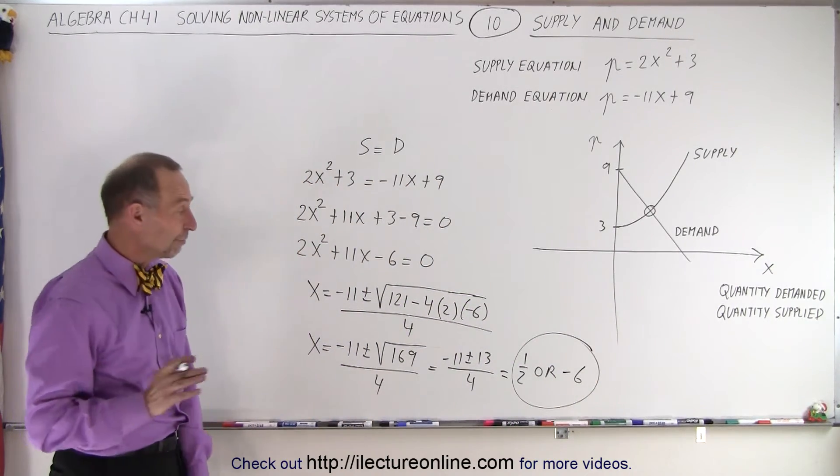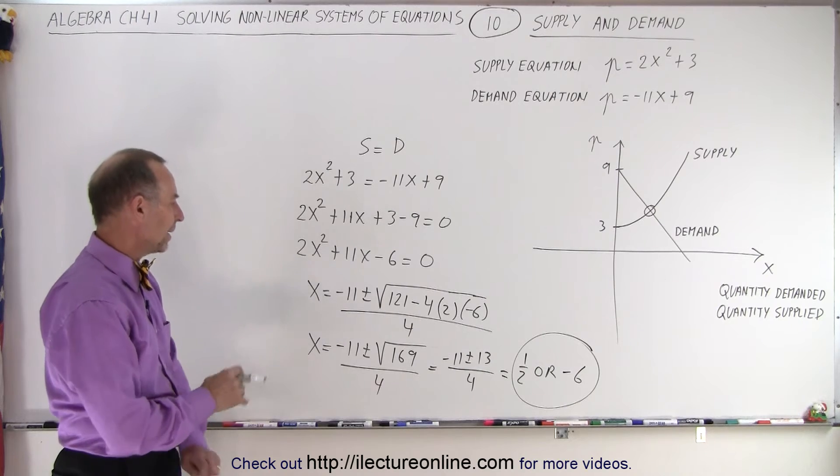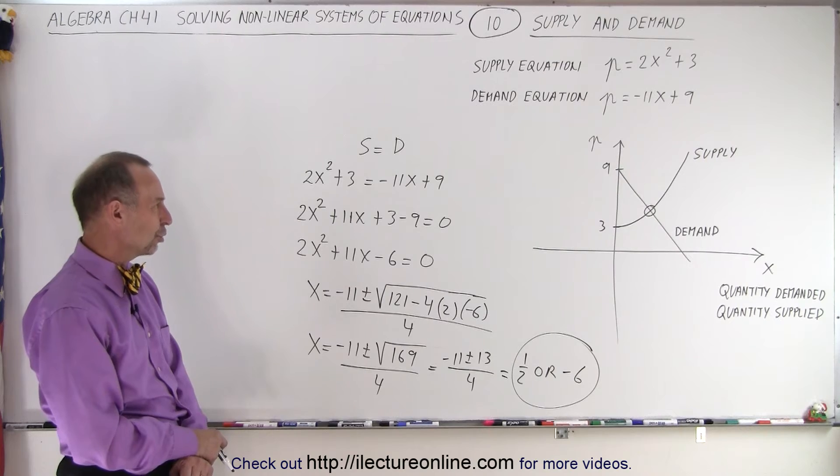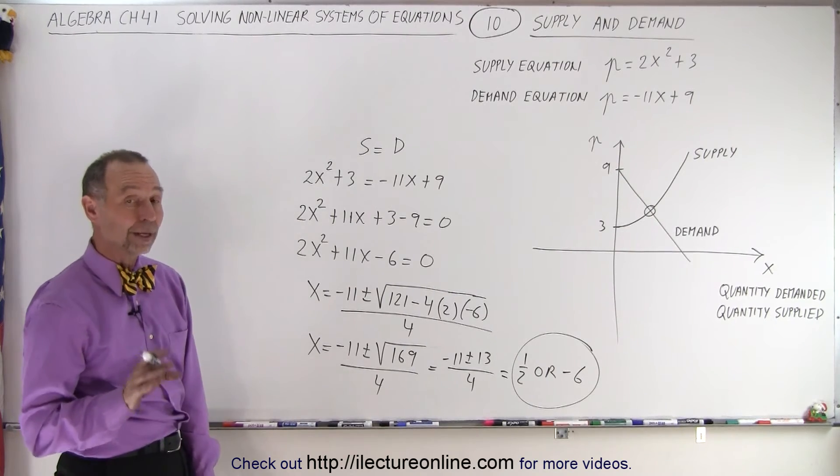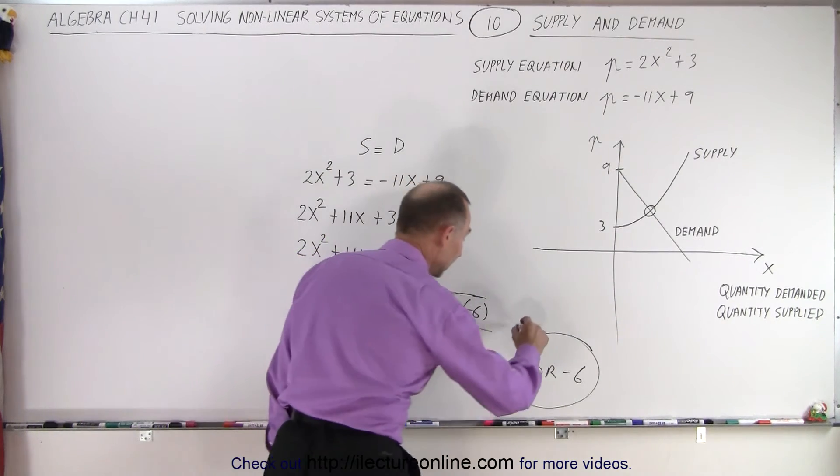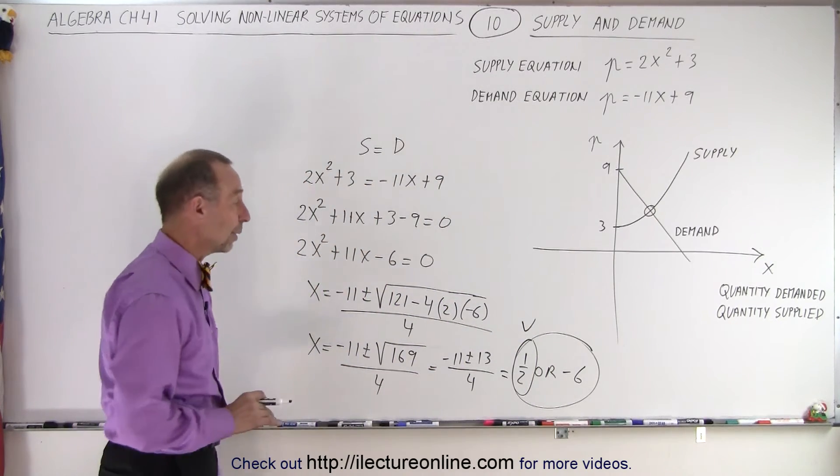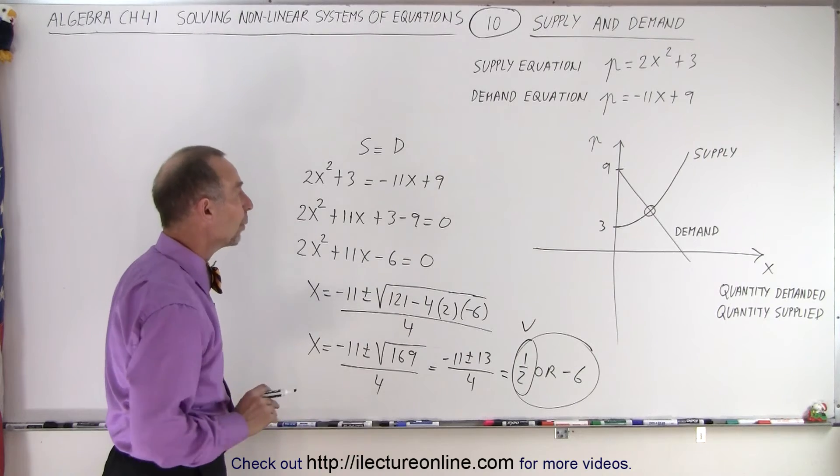And remember, we were looking for the quantity demanded. So a negative quantity is probably not a good quantity to have, but a positive quantity is. So this is the only good solution. You cannot have negative quantity. So that's a bad solution. We threw it away.